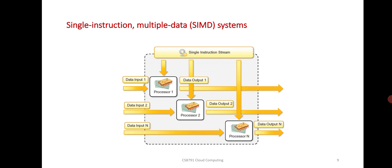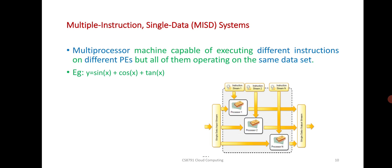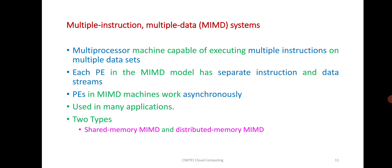Multiple instruction single data system (MISD) is a multiprocessor machine capable of executing different instructions on different processing elements, but all of them operating on the same data set. Here the processors are different but data set is the same. Last one is multiple instruction multiple data system (MIMD).